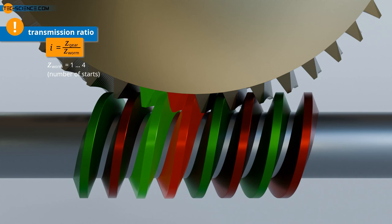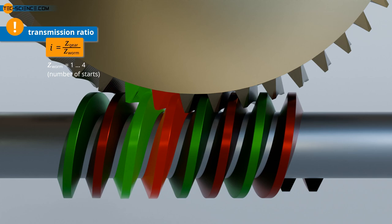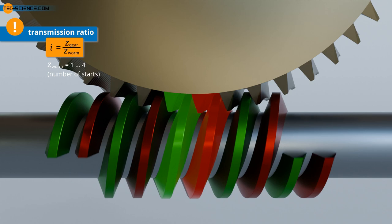In contrast, with one revolution of a double-start worm, the two threads would each move further by one position. A total of two teeth of the worm wheel would then be pushed further. In principle, the double-start worm would then behave like a conventional gear wheel with two teeth.